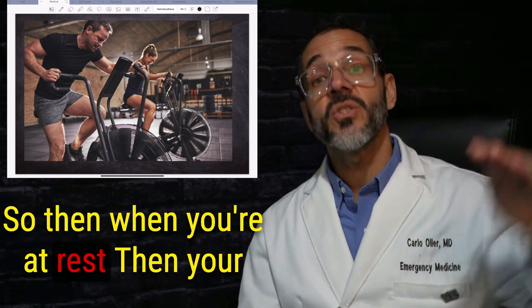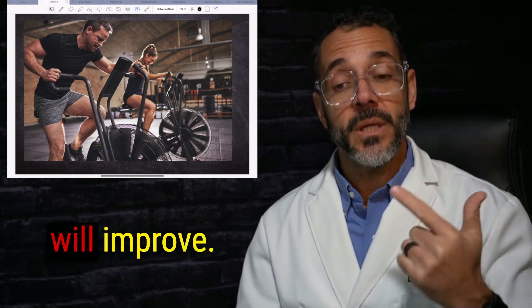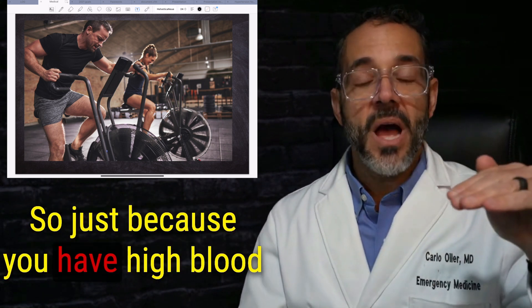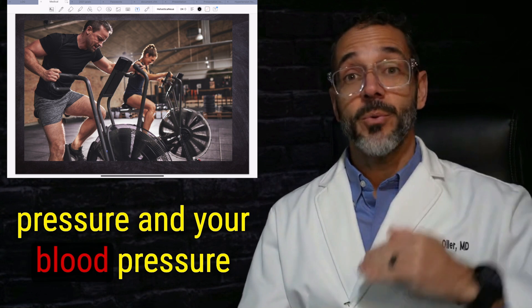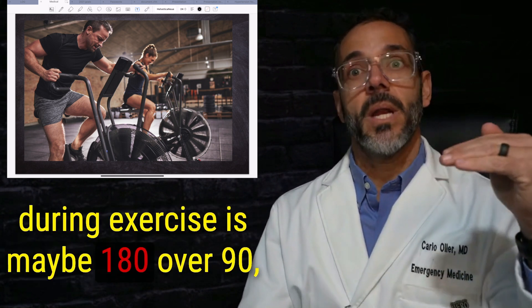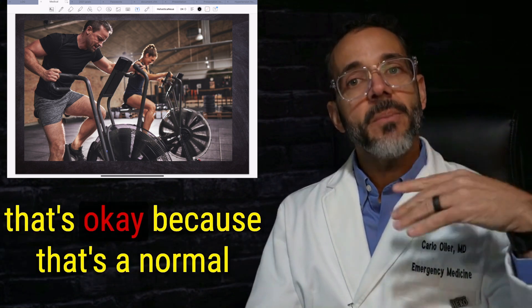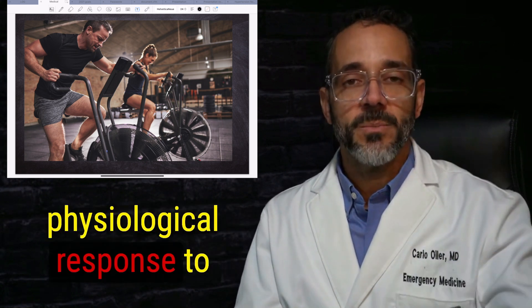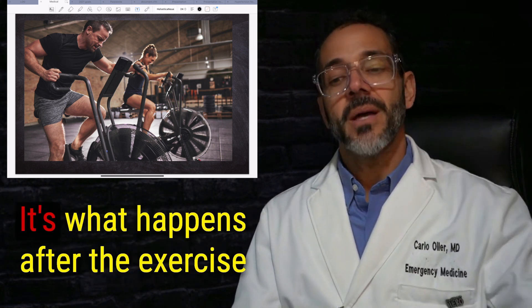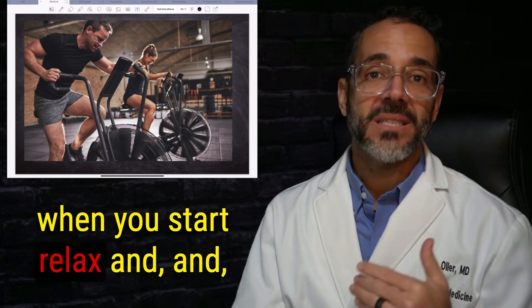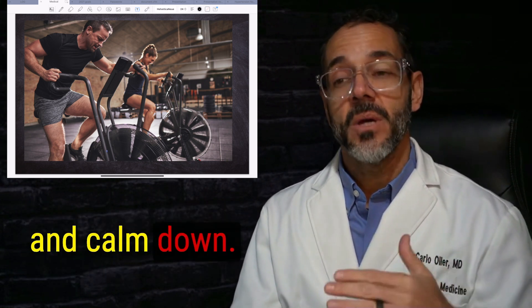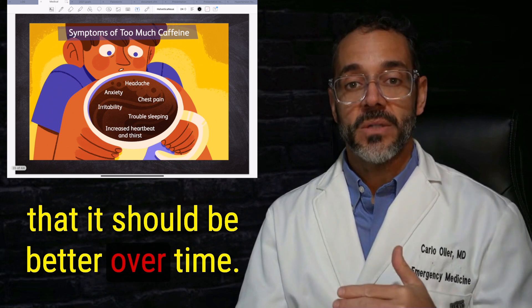So then when you're at rest, then your resting heart rate and blood pressure will improve. So just because you have high blood pressure and your blood pressure during exercise is maybe 180 over 90, that's okay because that's a normal physiological response to the stress of the exercise. It's what happens after the exercise when you start relaxing and calm down that it should be better over time.